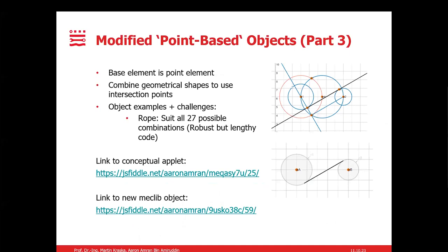The third part is the rope object, where basically it is supposed to be a rope which is attached to two circle objects. This is seen, for example, in the very first sample question where we make use of the rope and the circle in the pulley system. The idea behind it is that we just have to make use of the circles and some geometrical intersections as well.